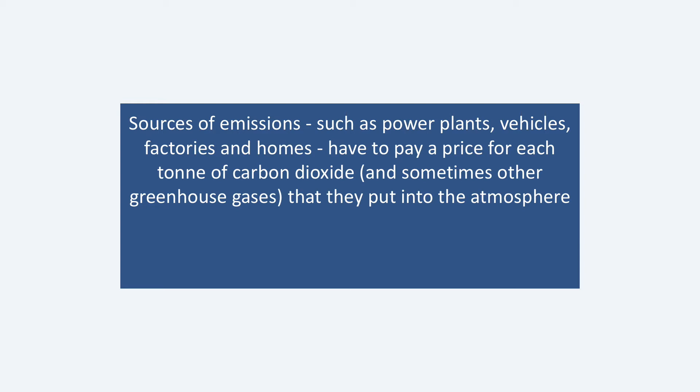Exactly how this is done doesn't matter for now. The price might be in the form of a tax, or it might be in the form of a requirement to buy tradable certificates — usually called allowances — under an emissions trading system. Under this type of system, one allowance must be purchased to cover each tonne of emissions, and the cost of buying the allowance is the carbon price. I'll cover these in my next talk, but for now what matters is that a price must be paid for each tonne of emissions.